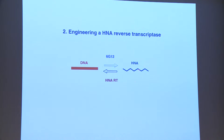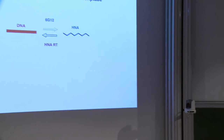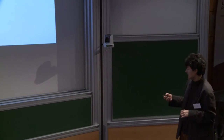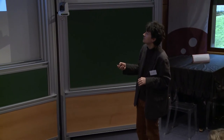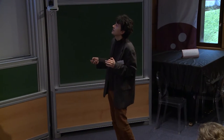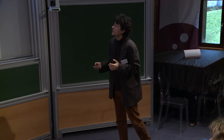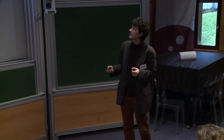Now we need to go back. This is just a band on a gel — not very interesting. We really want to decode the information contained in that band, and for that we need to build a reverse transcriptase. Again, no natural polymerases display any HNA reverse transcriptase activity.